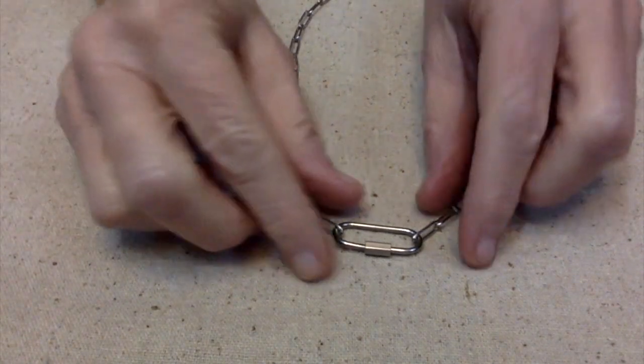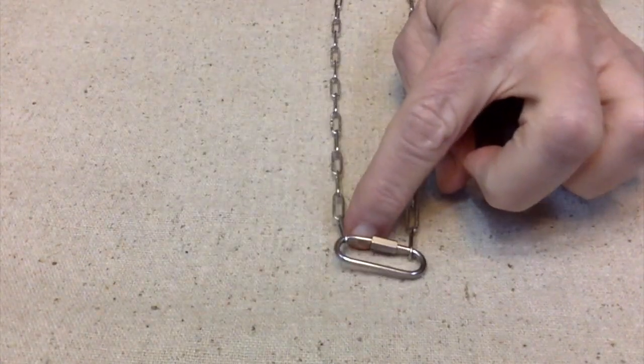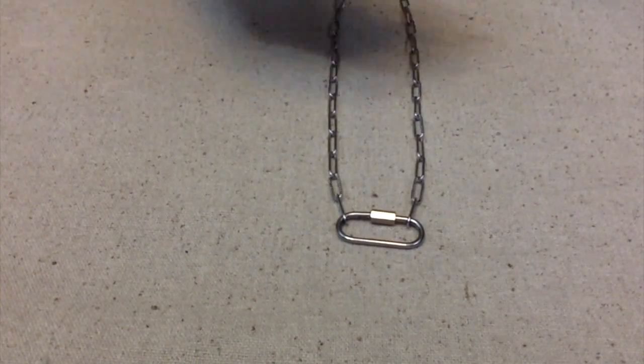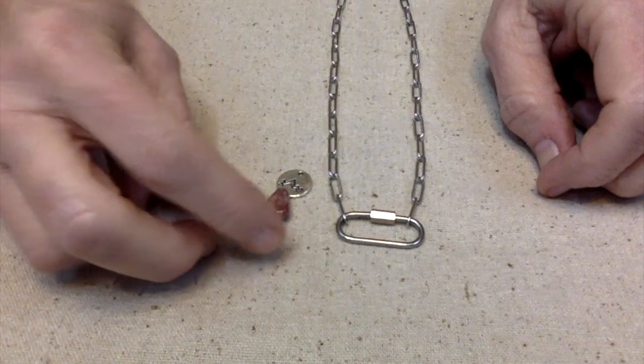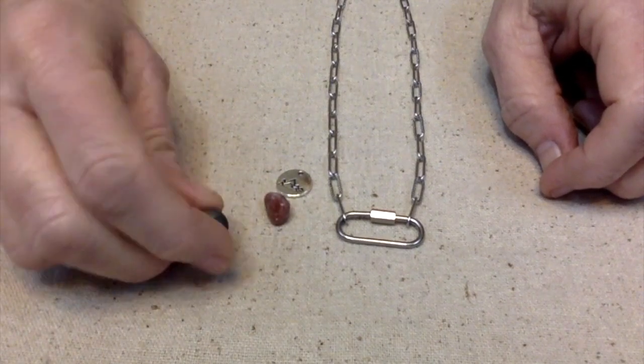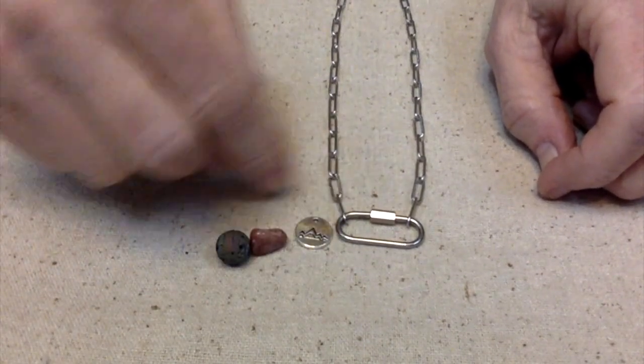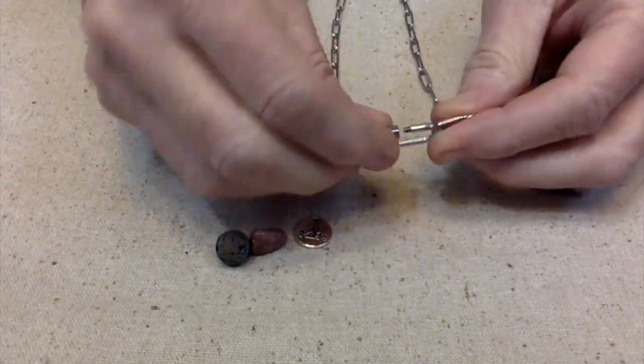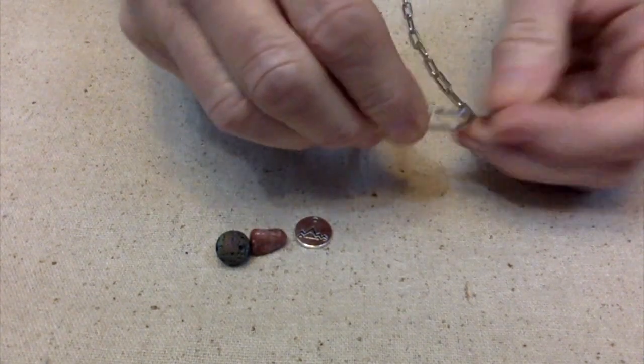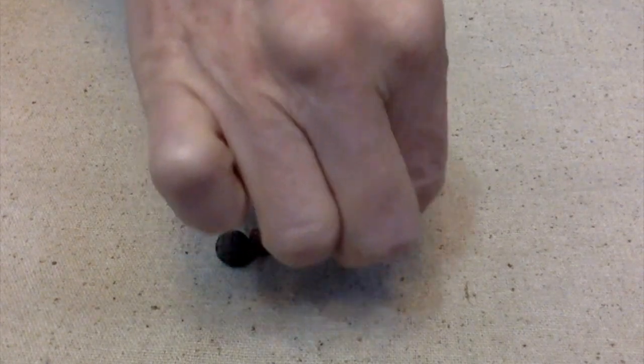Something else I could do, it would actually hang like this upside down. When you put it on your neck it would hang more like that. What I could also do is hang some stuff off of here, just get some head pins and make these charms. Another thing you could do is actually make it so it hangs like this.